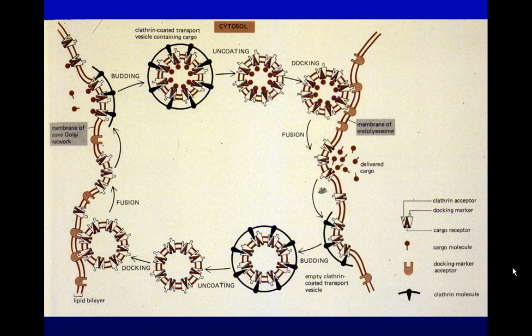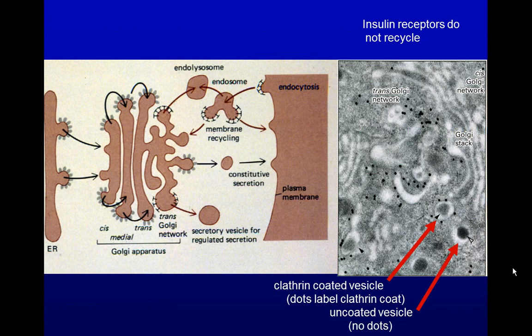The clathrin coat allows a membrane to pinch off a vesicle. This happens going from the Golgi apparatus to the endosome or to the plasma membrane — it starts out coated, then loses its coat, and then you get fusion of the vesicle with the early endosome. Likewise, you can go from the endosome back to the Golgi apparatus, taking the membrane back and again pinching off from the flat membrane facilitated by the clathrin coat.